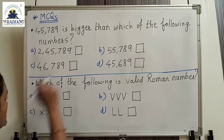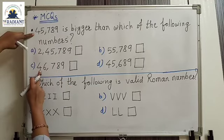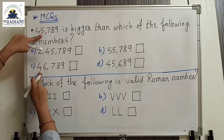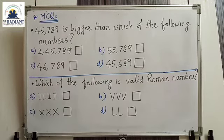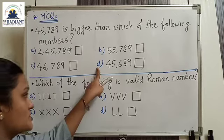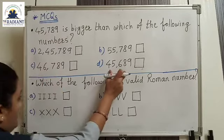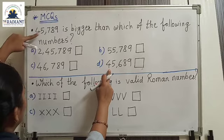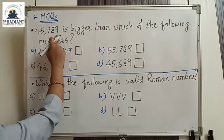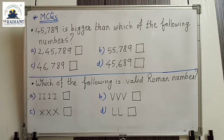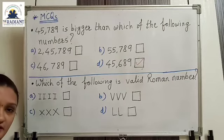Now check option C: 46,789 — also 5 digits. At the 10,000 place both are 4. Same. So we look at the thousands place: 5 versus 6 — 6 is greater. So 46,789 is greater. For option D: 45,689 — same number of digits. At 10,000 place: 4 and 4. At thousands: 5 and 5. At hundreds: 7 versus 6 — 7 is greater. So 45,789 is bigger than 45,689. Our answer is D.